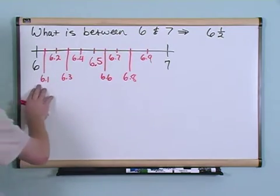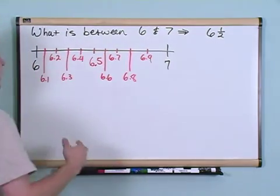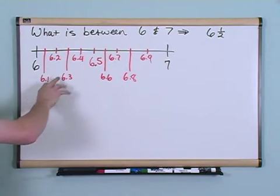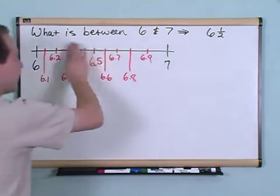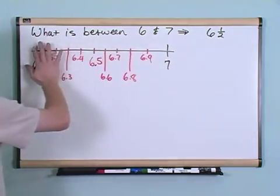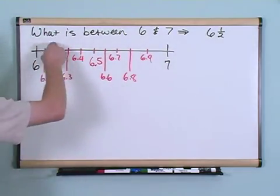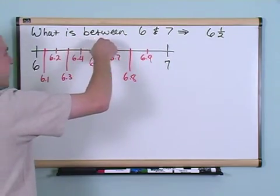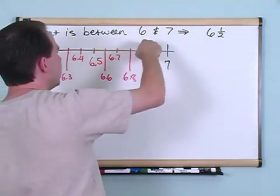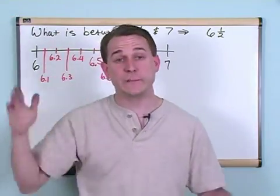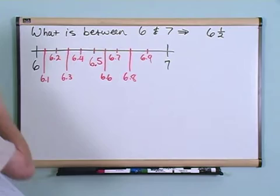Here, we have a bunch of decimals. Basically, all it means is anytime you have a number with this decimal point and then a number after it, it's just trying to tell you some fraction of the number between this number and the next number. So all of these numbers, 6.1, 6.2, 6.3, 6.4, 6.5, 6.6, 6.7, 6.8, 6.9, all of those are little tiny numbers in between the big numbers, which is 6 and 7. That's really all it means.